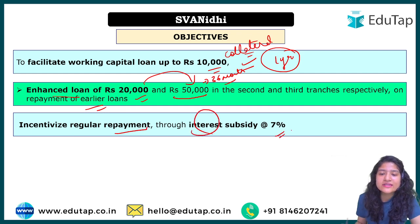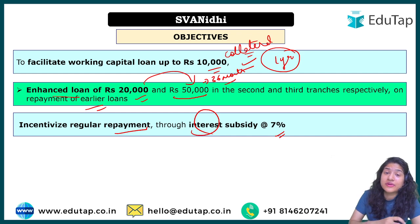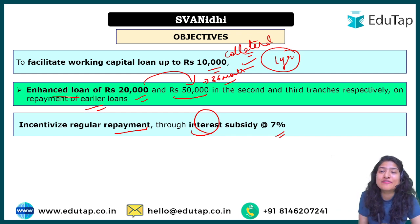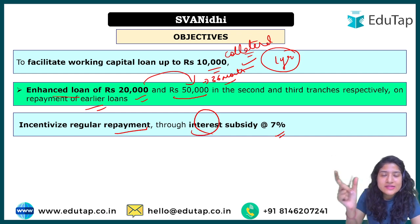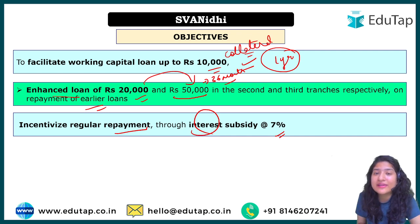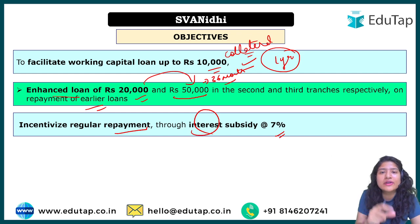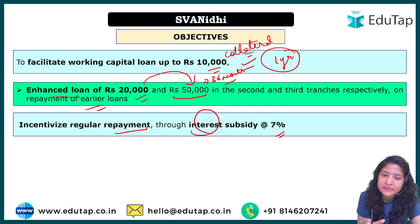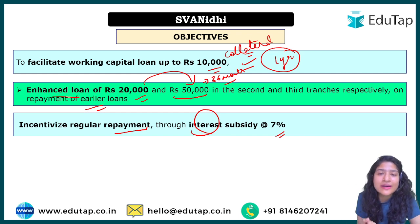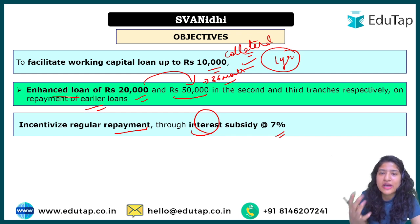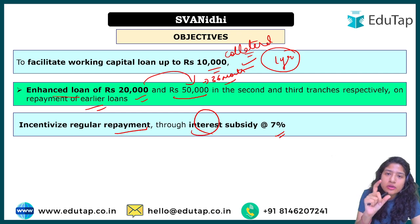The scheme also incentivizes regular payment through an interest subsidy at 7%. Of course, if they are taking a loan from a bank, the bank will charge a rate of interest — usually ranging from 14% to 24%, which would be a lot for beneficiaries to give back. That is why the government provides an interest subsidy. How much exactly depends on the institution from which you have borrowed, as it fluctuates from bank to bank. But whatever rate of interest is charged, the government will give back 7% directly via Direct Benefit Transfer into the beneficiary's account — not to the bank, but directly to the beneficiary.